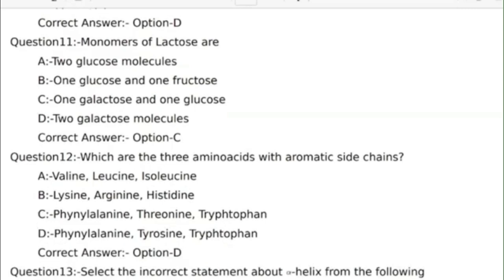Twelfth question: Which are the three amino acids with the aromatic side chain? Correct answer: Option D, Phenylalanine, tyrosine, tryptophan.